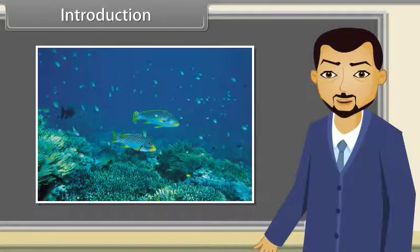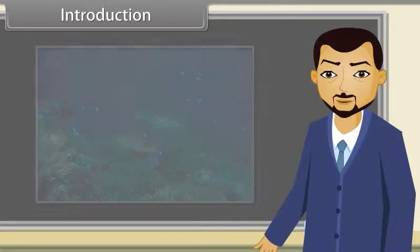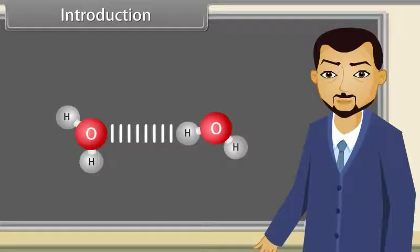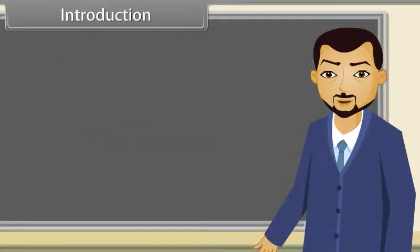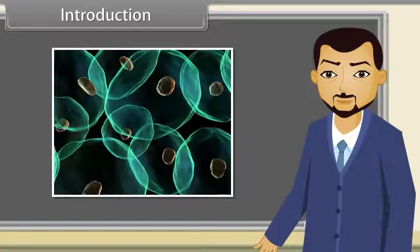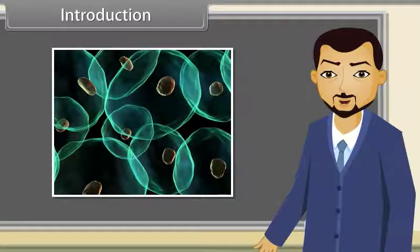Life depends upon hydrogen bonding. Life is created from water, and water is a liquid due to hydrogen bonding in its molecules. If there is no hydrogen bonding, then water would be a gas just like air. There would be no oceans, no lakes and no rivers. The fluids in cells of living bodies also exist due to hydrogen bonding. So all the living systems depend upon hydrogen bonding.